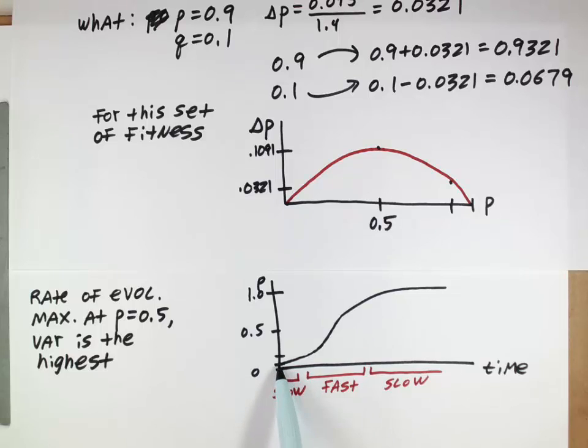That's the maximum amount of variation you can have in your population. Over here, most of the alleles are lowercase a. Over here, most of the alleles are capital A. There's not as much variation. Right in the middle, when you have the highest genetic variation, that's when you have the fastest rate of evolution.